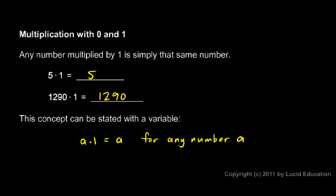We'll do that over and over again: take an idea and state it mathematically using variables. In this case, a times 1 equals a for any number a. A here could be any number, so any number multiplied by 1 is simply equal to that number.